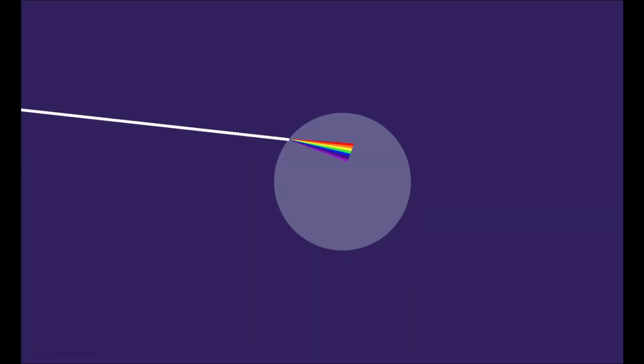The process starts when the white light enters the water droplet. As soon as the white light enters the water droplet, it gets refracted and splits into seven colors. These seven colors further get refracted in the same medium.